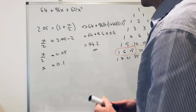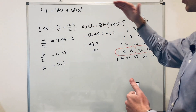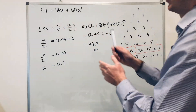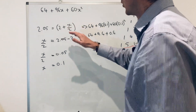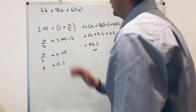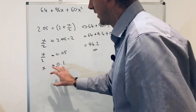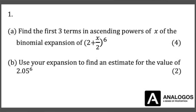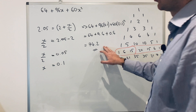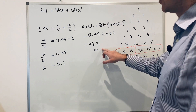Substituting x equals 0.1: 64 plus 96 times 0.1 plus 60 times 0.1 squared equals 74.2. That's just two marks for part B — the bulk of the work was done in part A. Remember, you can eliminate the powers because if they equal each other, the bases must be equal. Then rearrange to get x, substitute it in, and the final answer is 74.2.